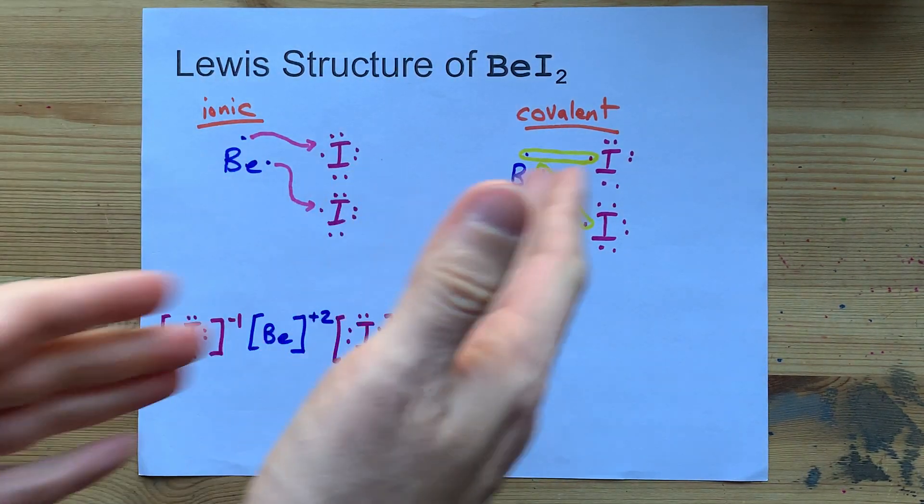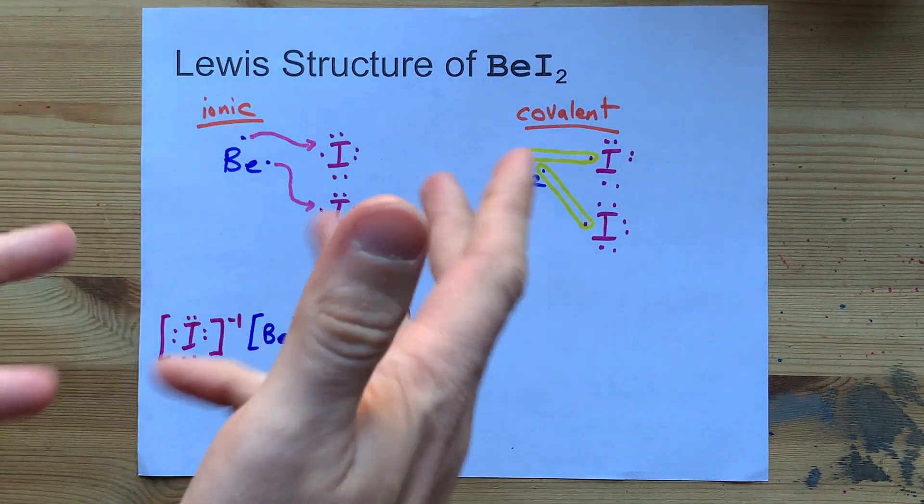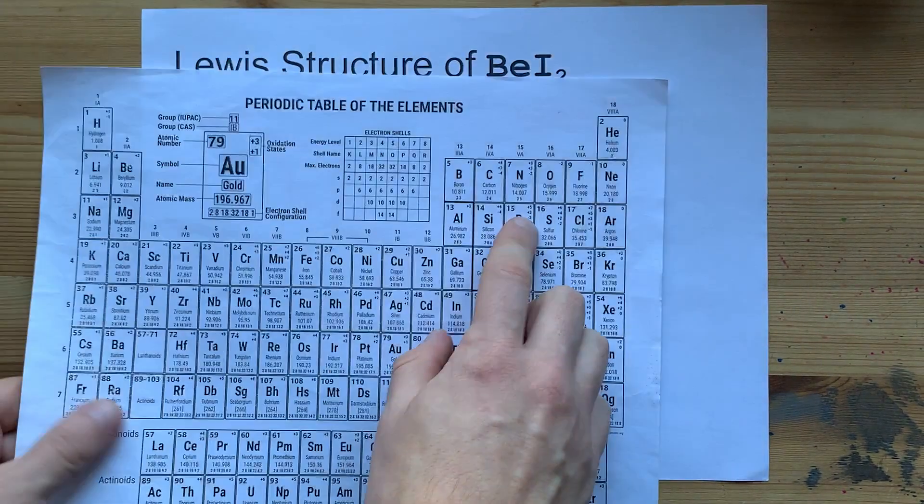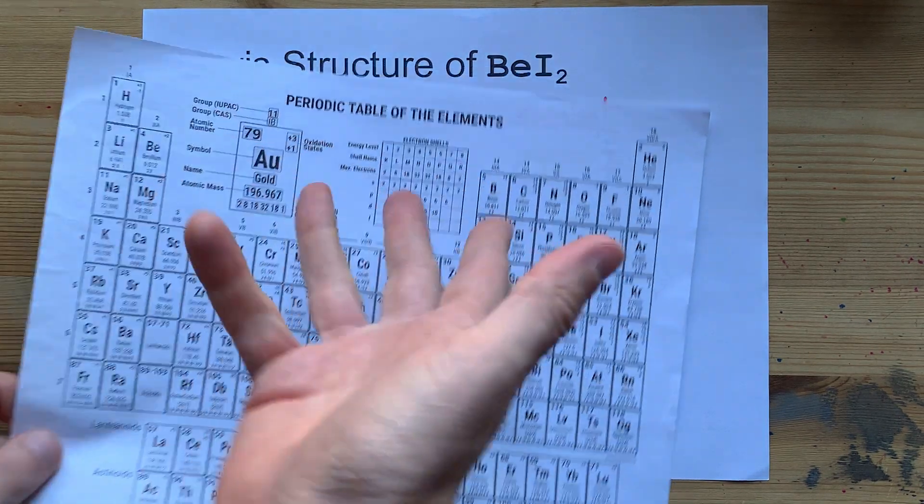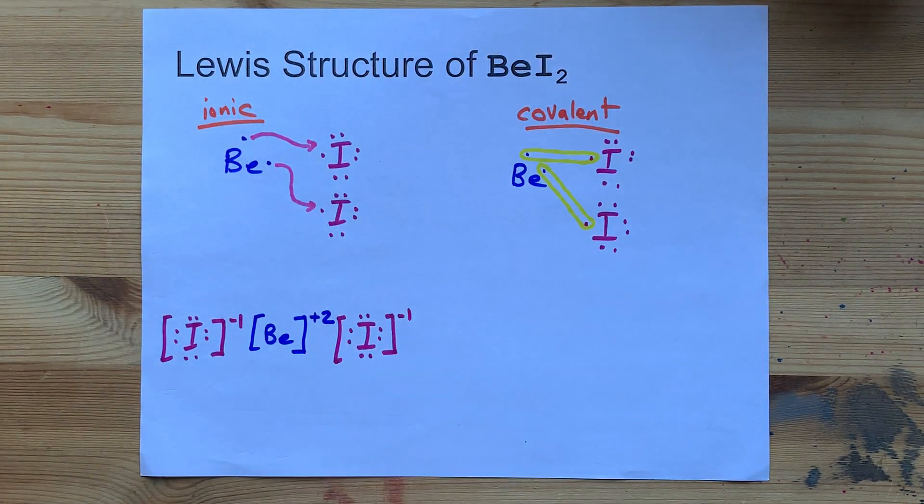Boron, beryllium, and lithium are the exceptions to the octet rule. Boron's happy with 6, beryllium's happy with 4, lithium's happy with 2. I don't know, you were probably just supposed to memorize that.